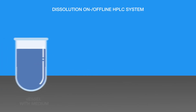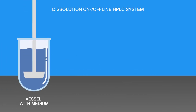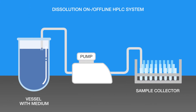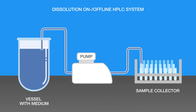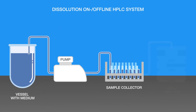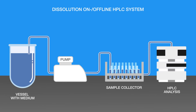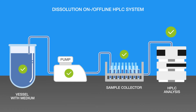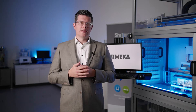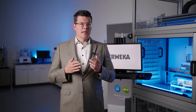With an on-offline HPLC system, the order is reversed — because an HPLC analysis takes more time, the samples are first stored in an autosampler and then afterwards directly injected into the HPLC analysis. AWEKA's online HPLC approach is unique: it enables full HPLC online analysis automation with no manual steps between the dissolution test and the HPLC analysis.